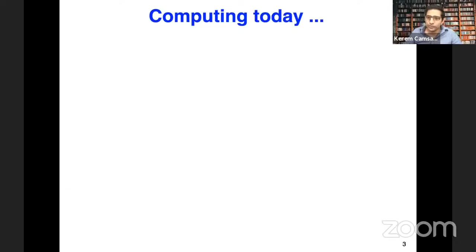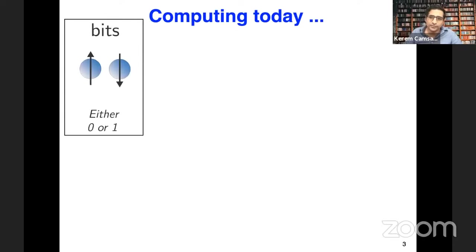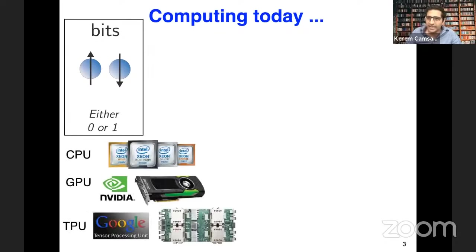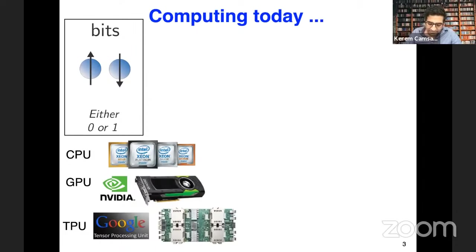Let me begin by saying a few words on where computing is today. You are all familiar with bits — everything you do in digital computing, in software or hardware, is really being enabled by this abstraction, this notion of a bit. A bit is really this object that's zero or one, and it's always deterministic. You're either zero or you're one.